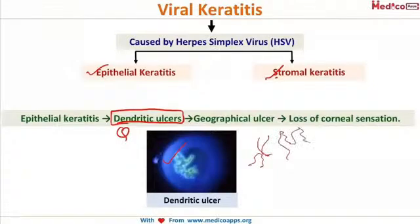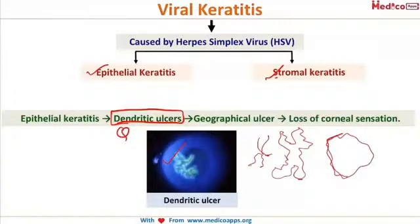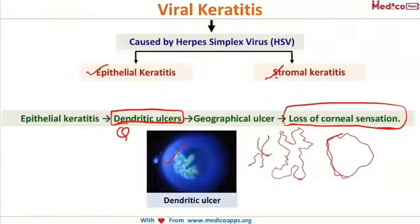This branching dendritic ulcer further progresses into a geographical ulcer, looking like the map of a country, ultimately resulting in loss of corneal sensation. Whenever you suspect a viral corneal ulcer, touch the patient's cornea with a wisp of cotton — in a normal eye, corneal sensations are preserved and the patient blinks. This blink reflex is absent in the eye with herpes keratitis.